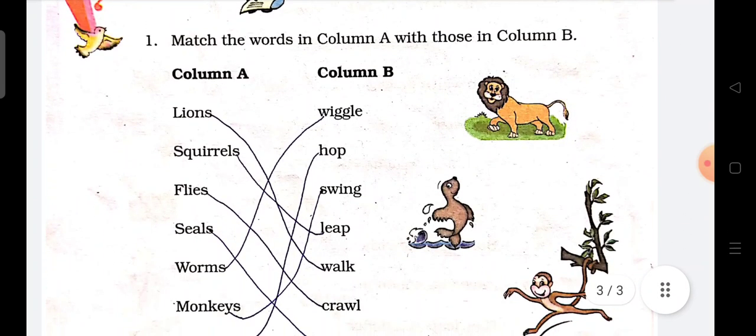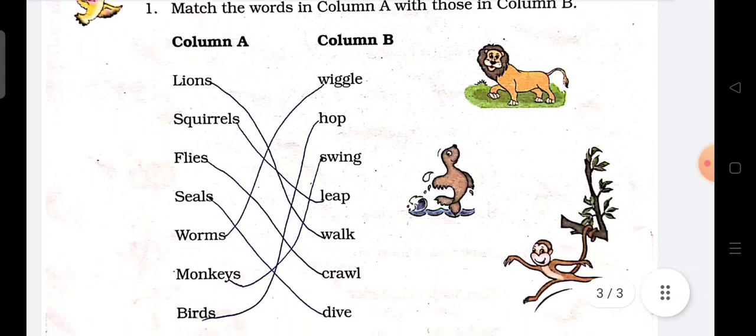Next, match the words in column A with those in column B. Column A has the animals. In column B these are the actions.